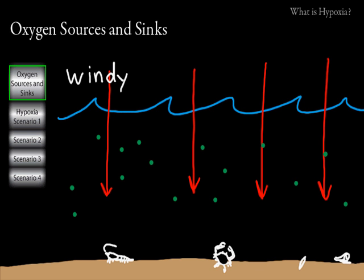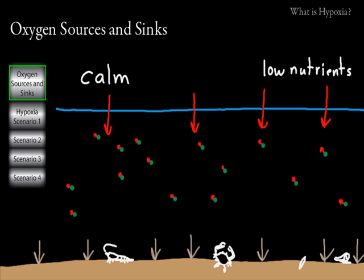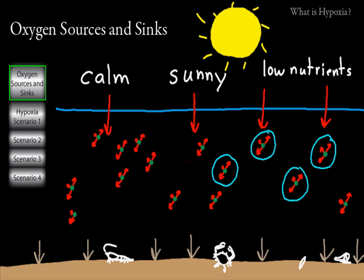The atmosphere is one of the primary sources — if not the primary source — of oxygen in aquatic systems. Now, let's think about our calm day and add a low amount of nutrients to the system, and then add some sunshine. The algae are now producing oxygen through photosynthesis, giving us another source of oxygen. If there are aquatic plants on the bottom too, those will also produce some oxygen.